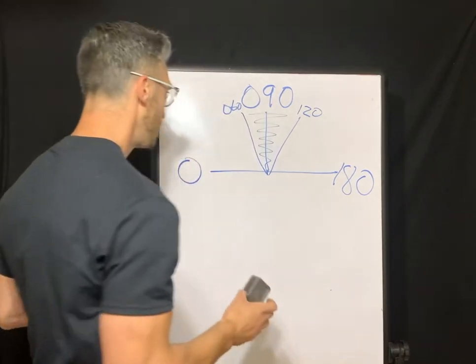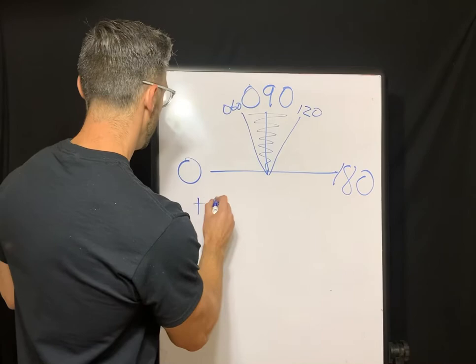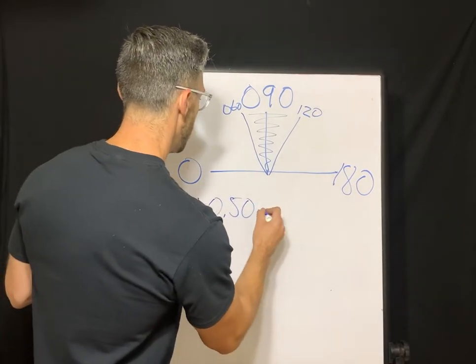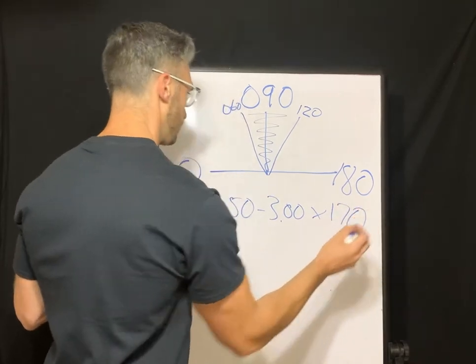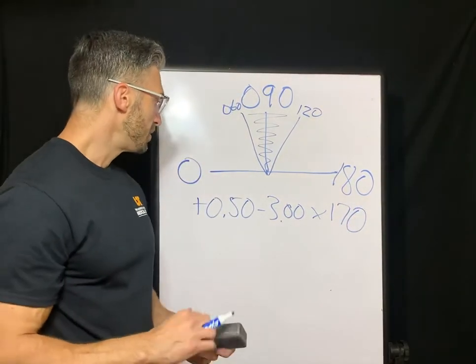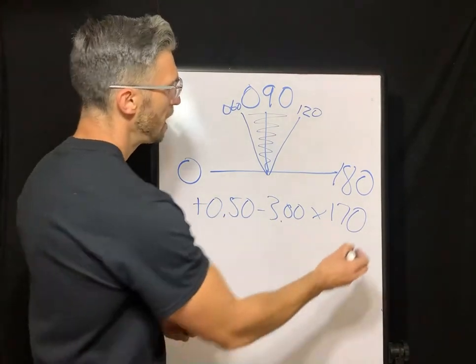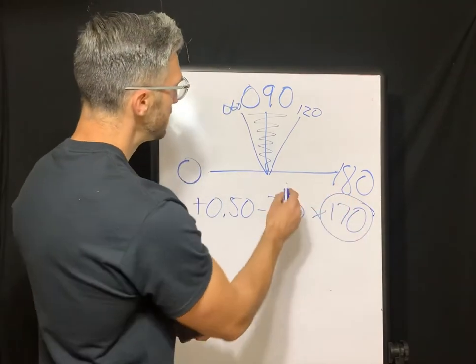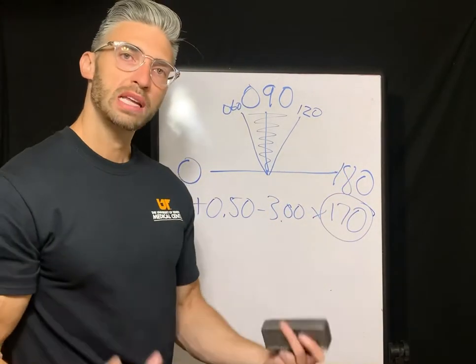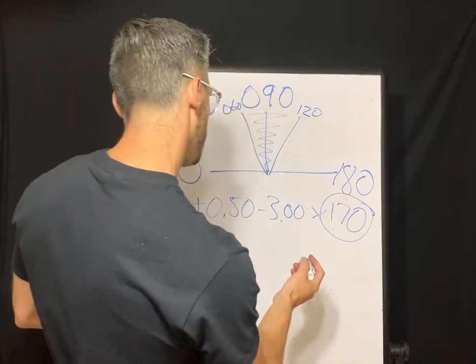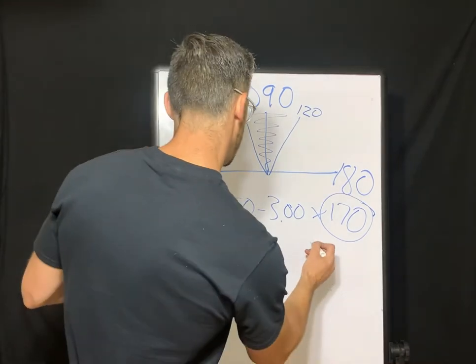So you need the minus two along the 90. So that's highlighting the fact that that's with the rule astigmatism. So negative one at 180, negative two at 90, you need more minus because the cornea is more plus along the vertical. That's a little confusing. So let's do another example. I hope for some of you that's a light bulb moment.